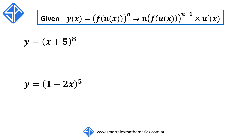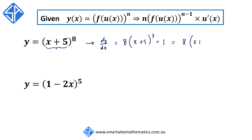What we do is we take the original power and put it at the front. We then reduce the power of the original function by 1, so we have 8 times x plus 5 to the power of 7, and we multiply by the derivative of what's inside the bracket, which in this case is 1. So we're going to get 8 times x plus 5 to the 7.